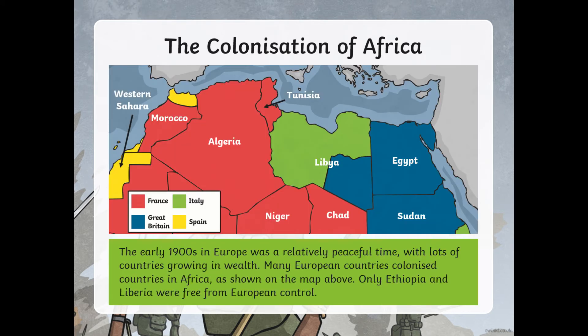We also need to know about the colonisation of Africa. The early 1900s in Europe was a relatively peaceful time, with lots of countries growing in wealth. Many European countries colonised countries in Africa, as shown on the map.